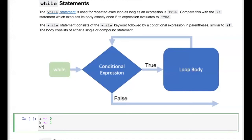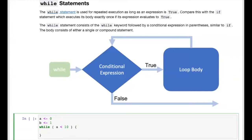We write the keyword while, and our conditional expression will be a is less than 10. We then start a compound statement that will be the body of our while loop. Since a already has the current value of the sequence, we simply output that before computing the next value.